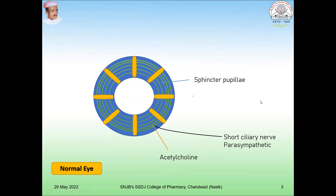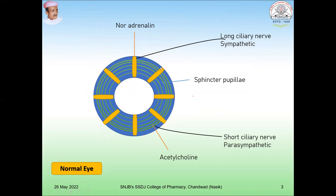Then we have another structure — the long ciliary nerve, also called the dilator pupillae. These long ciliary nerves are innervated with the sympathetic nervous system, where the neurotransmitter is adrenaline, and they are called the dilator pupillae.